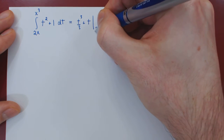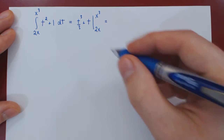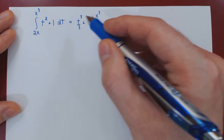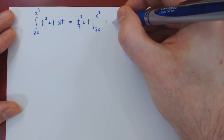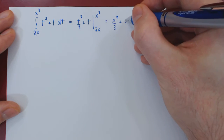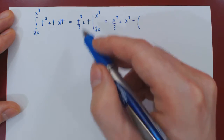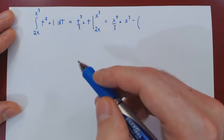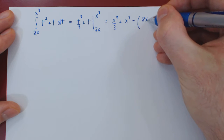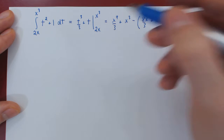We must then evaluate this function from 2x to x³. First, replacing t by x³: x³ cubed is x⁹, so we get x⁹/3 + x³. Then, replacing t by 2x: (2x)³ gives 8x³/3 + 2x.